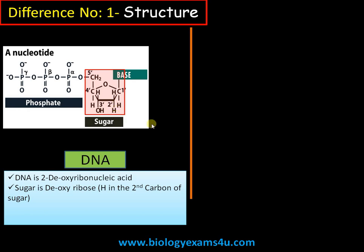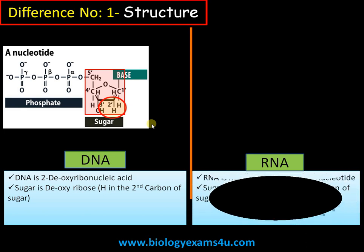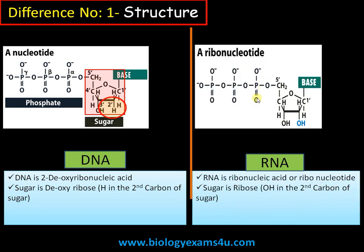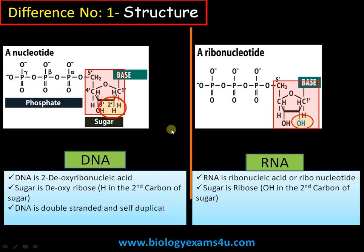Whereas in the case of RNA — ribonucleic acid — the sugar is ribose. This is a phosphate group, this is the nitrogenous base, and this is the sugar. In RNA, the sugar is ribose; in the second carbon position there is a hydroxyl group. In DNA it is hydrogen, that's why DNA is called deoxyribose — an oxygen atom is missing.